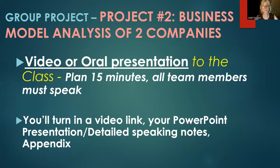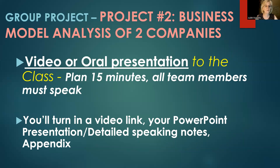A couple of weeks later, you'll complete project two — a non-financial business model analysis of the same two companies. You're going to look at their business, their target market and customers, their strengths, their risk factors and growth opportunities. You'll look up five years of stock value and talk about stock trends, look up something called governance score, and find five outside resources — five articles about each company — and compare those articles to what you've learned about the company internally using their annual report. You will make a video or oral presentation about 15 minutes long, and turn in at the same time your video link, PowerPoint presentation, detailed speaking notes, and an appendix.